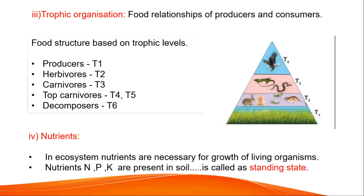Next, coming to trophic organization. We study the food relationship of producers and consumers. The food structure is based on trophic levels: T1 through T6. T1 is trophic level 1, T2 is trophic level 2, and so on. All producers are kept under T1 level.